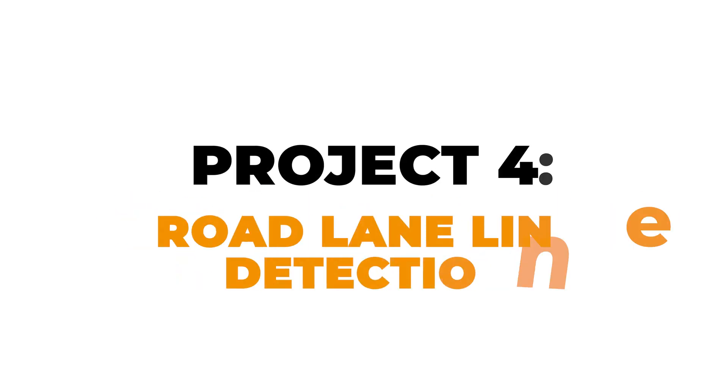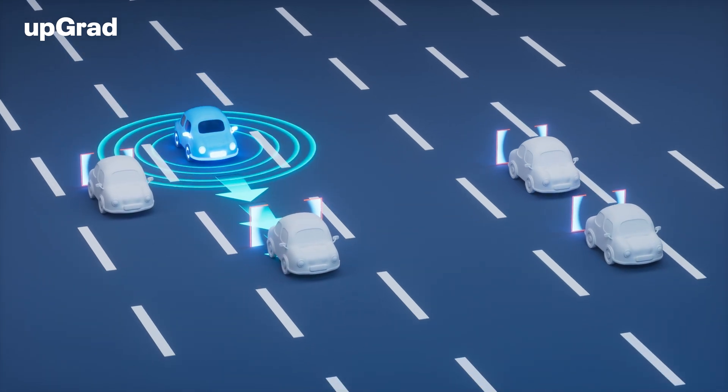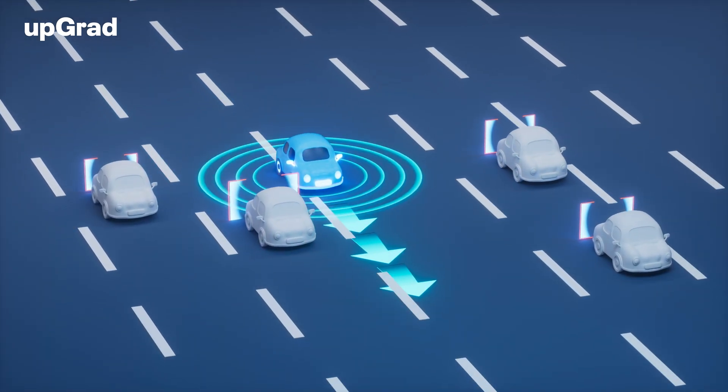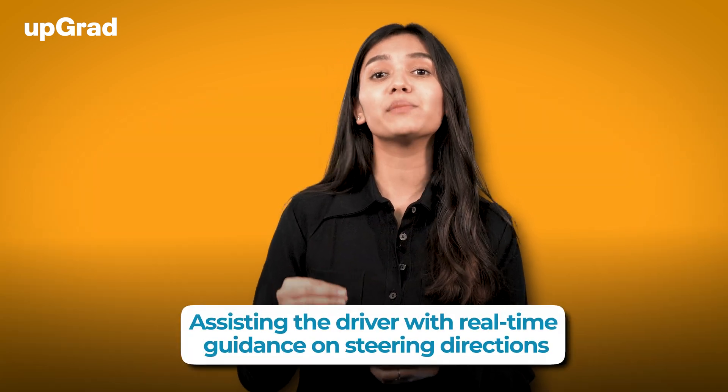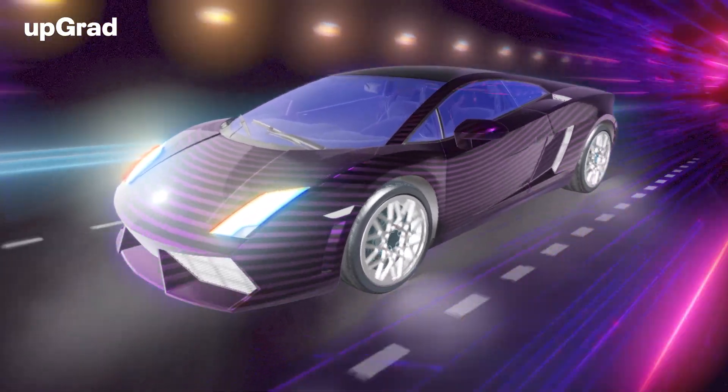Project 4: Road Lane Line Detection. Imagine building a system in Python that can guide a driver by detecting lane lines on the road. This is more than just lines — it's about assisting the driver with real-time guidance on steering directions. This technology is key to the development of driverless cars. You can develop an application that identifies track lines from input images and continuous video frames. It's a great start for anyone interested in AI and autonomous vehicles.